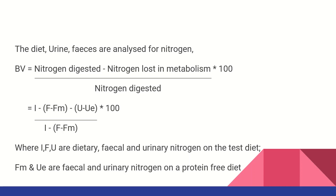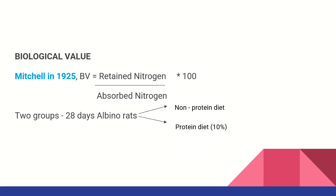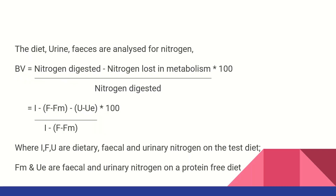This is the elaborated formula: nitrogen digested minus nitrogen lost in metabolism — that is the digestion and metabolic process, catabolism plus anabolism — divided by nitrogen digested, into 100. The formula is: I minus F minus Fm minus U minus UE, divided by I minus F minus Fm, into 100. Here, Fm and UE are fecal and urinary nitrogen on a protein-free diet.